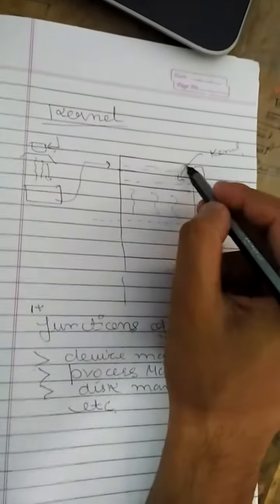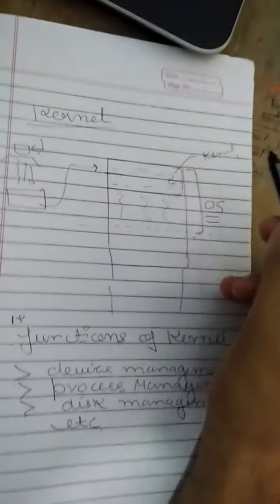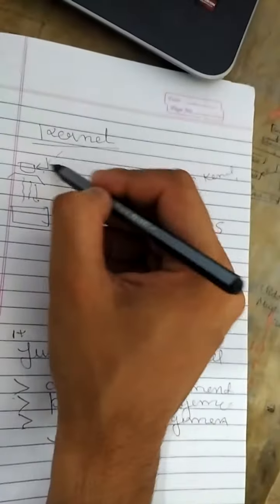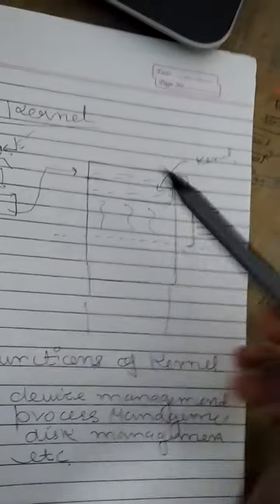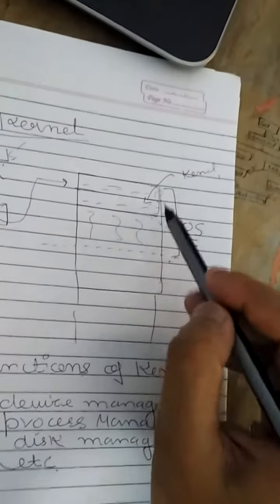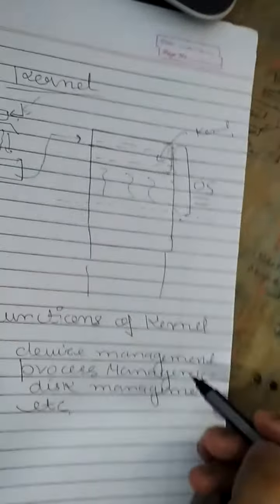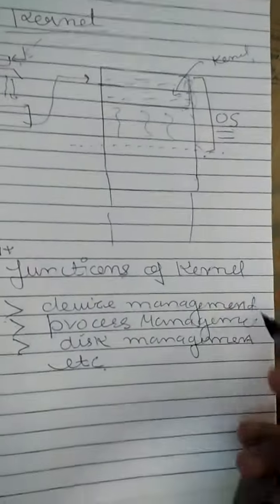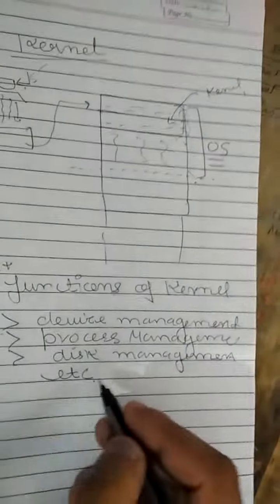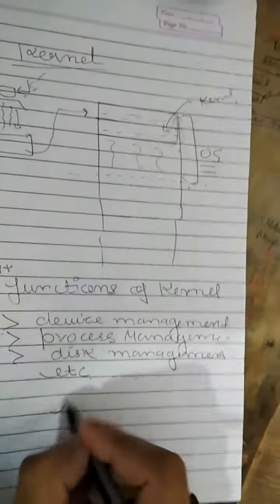To briefly explain again: a kernel is the core part of the operating system, which is loaded first when the computer is powered on. This part of the operating system, called the kernel, is responsible for various functions such as device management, process management, and disk management. Thanks.